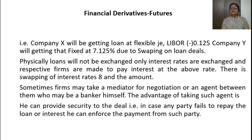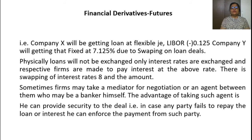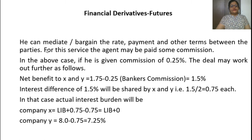Sometimes a firm may take a mediator — such as a banker — for negotiation or agreement between them. The banker contacts both parties and arranges the swap deal, taking a commission for this service. The advantage of using such an agent is that he can provide security for the deal. In case any party fails to repay the loan or interest, he can enforce payment from such parties.